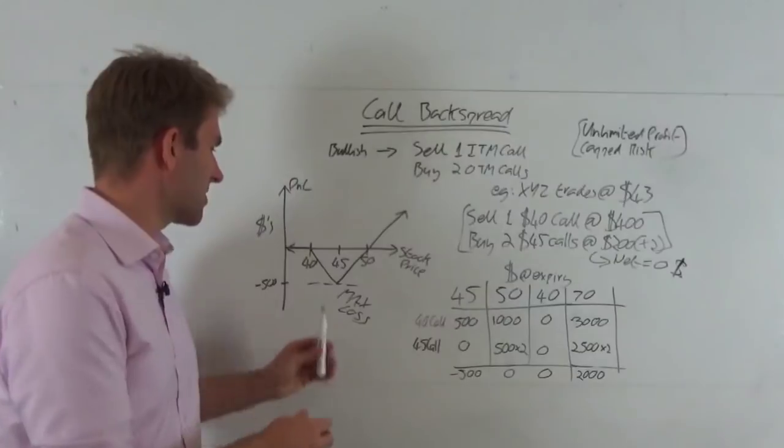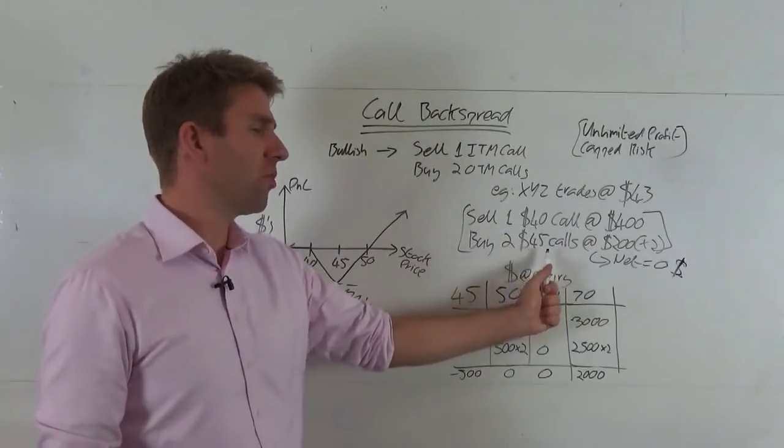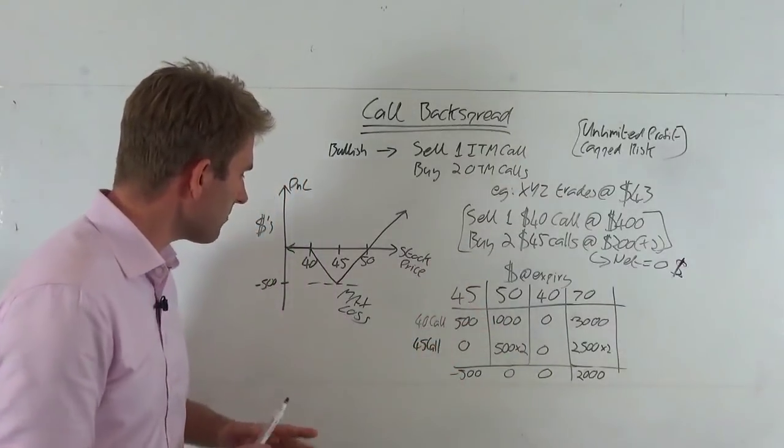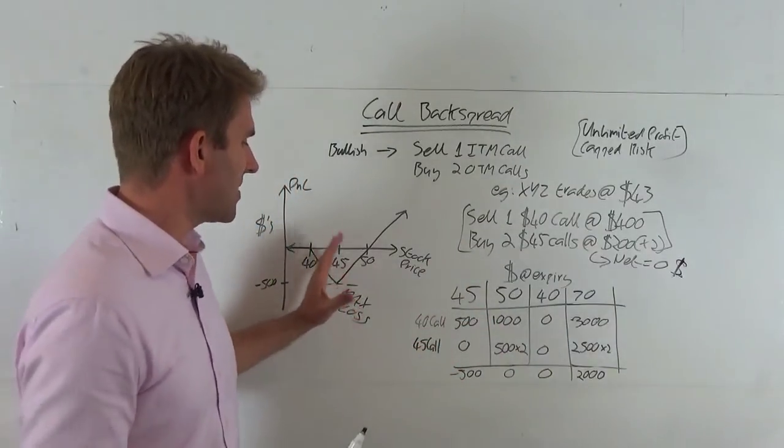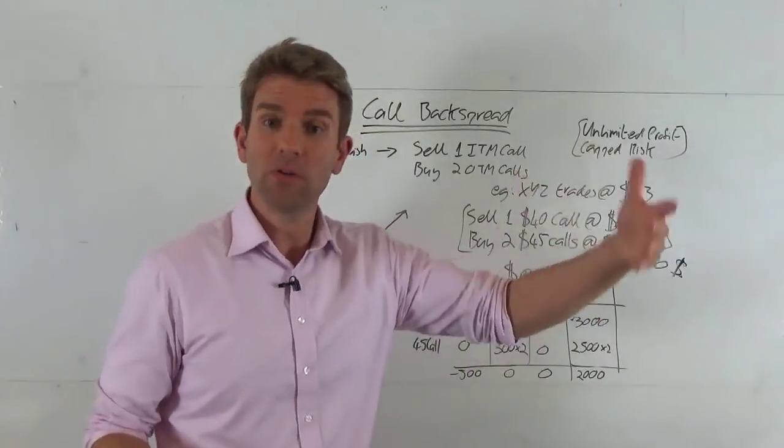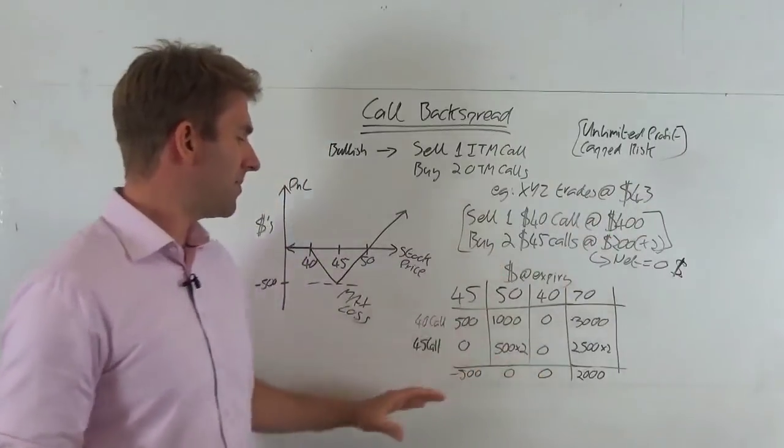We've seen now that the max loss is at that $45, which is the call that we bought that expires worthless. That affects the formula the most. What happens, let's say at $50. So $50 is prices going up. We're right on the deal. It's gone from 43 to 50. What happens there?